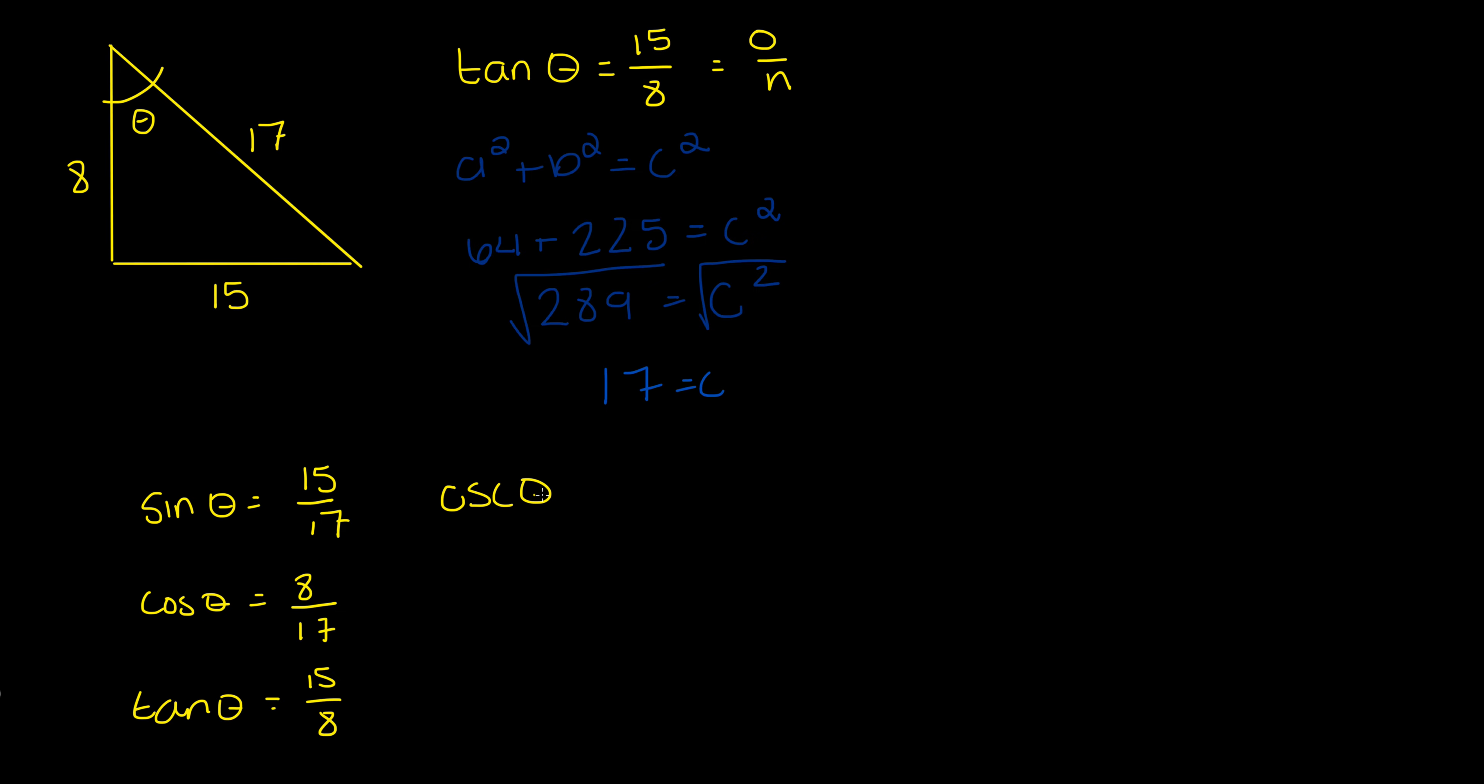Cosecant theta is going to be the reciprocal. Secant of theta is going to be the reciprocal of cosine which is 17 over 8. And cotangent of theta is going to equal 8 over 15.